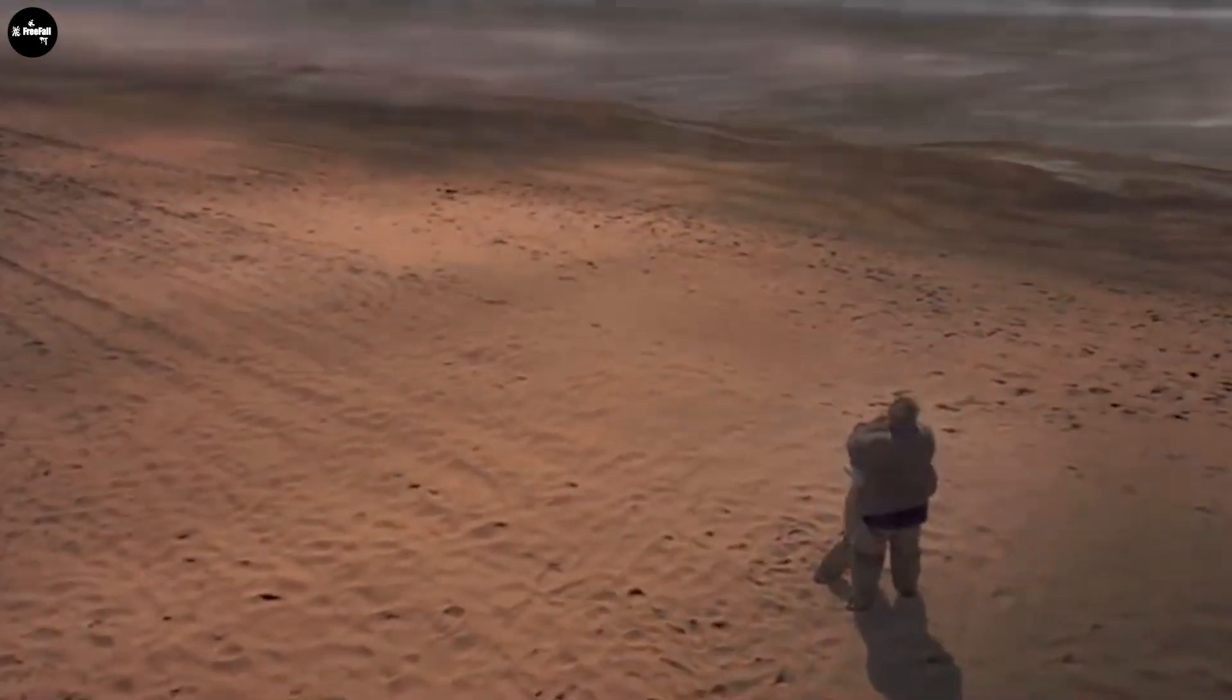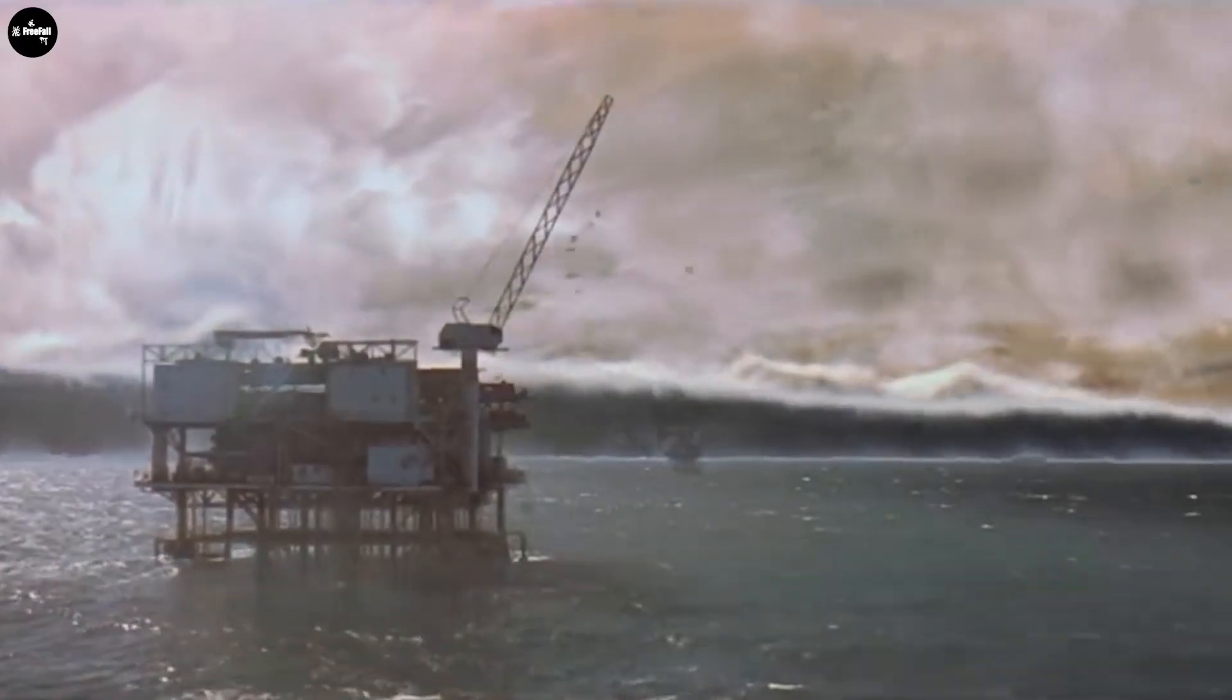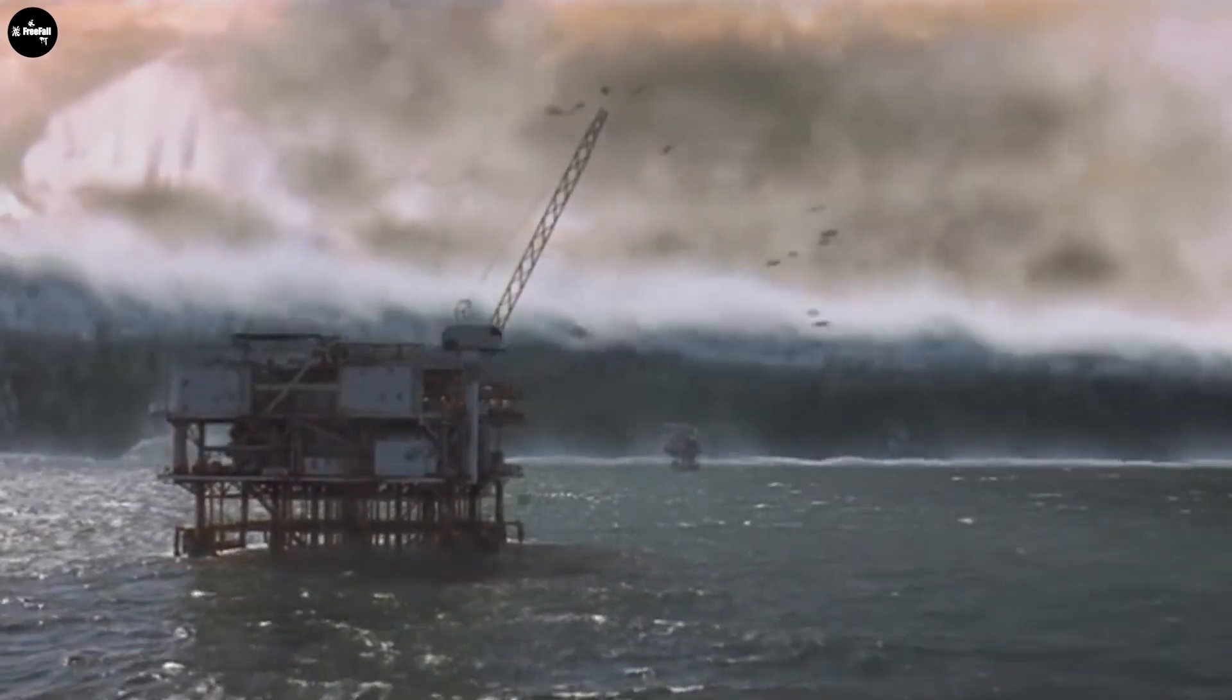Millions of asteroids are orbiting the Sun, of which about 750,000 are dwelling in the asteroid belt between the orbits of Mars and Jupiter. The width of the meteorite could be up to hundreds of kilometers.